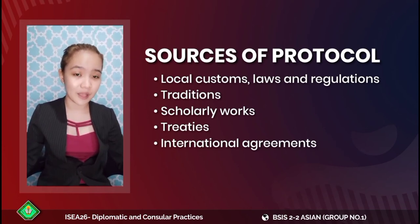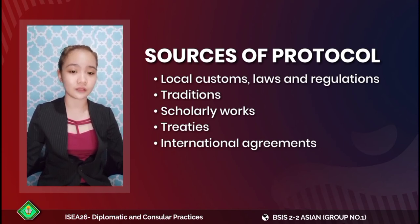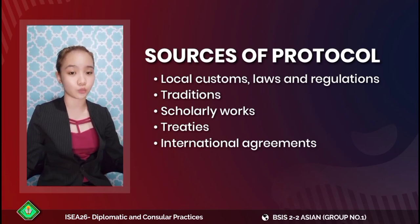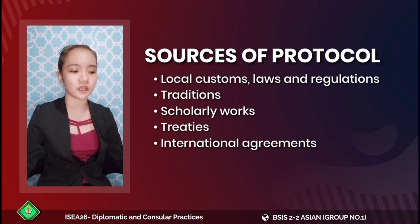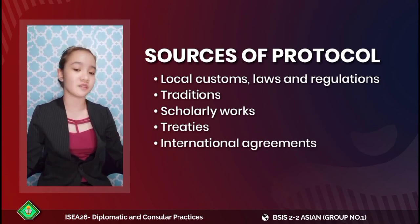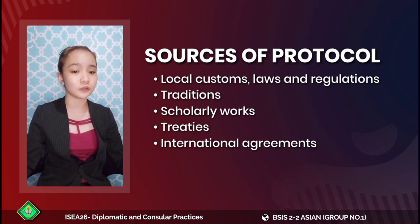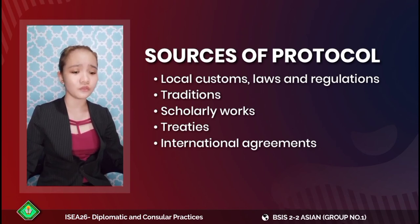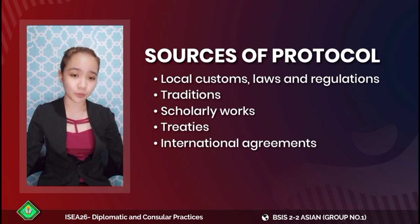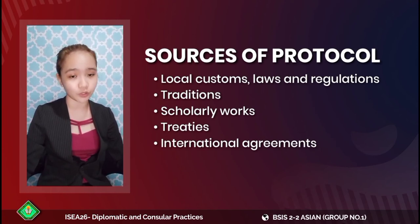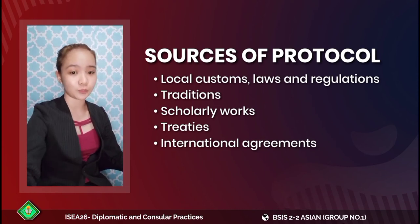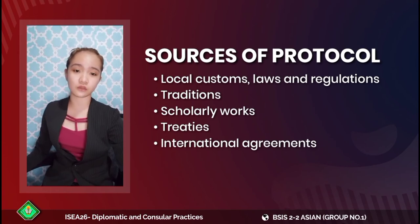Next, we have scholarly works. For example, from the United States, former President Barack Obama's former ambassador Capricia Marshall wrote a book titled 'Protocol: The Power of Diplomacy and How to Make It Work for You.' Scholarly works are written documents by former diplomats or ambassadors that serve as references, recommendations, and informative content about protocol to influence future diplomats — helping them adapt, learn, and apply new techniques to improve diplomatic protocol.